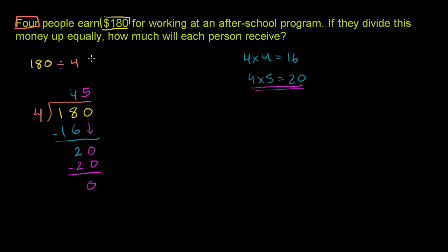So 180 divided by 4 is equal to 45. So if these four people were to split the money equally, they'll each get $45.